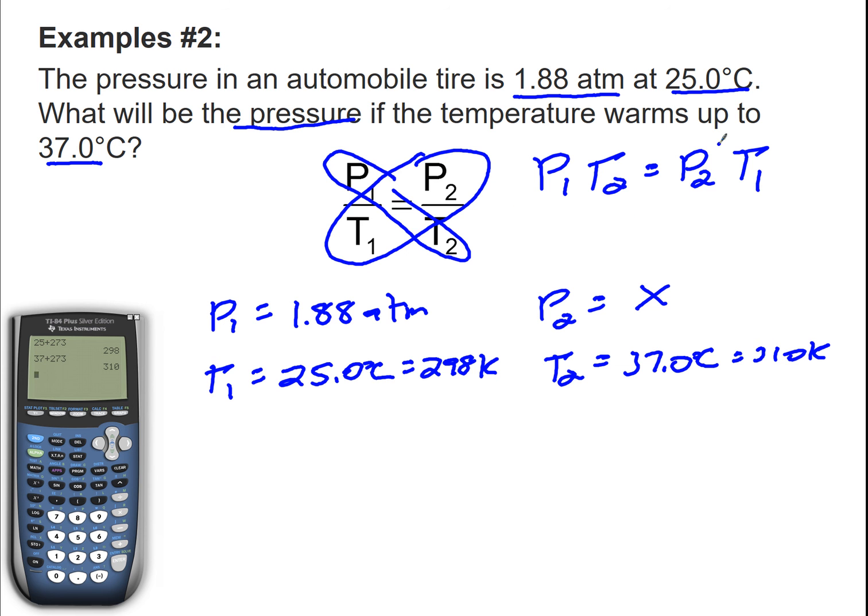I need to isolate P2 in this expression. So that means I have to divide both sides by T1. T1 cancels out. I'm left with P1 times T2 divided by T1 equals P2. So P1 is 1.88 atm times T2, which is 310, divided by T1, which is 298.